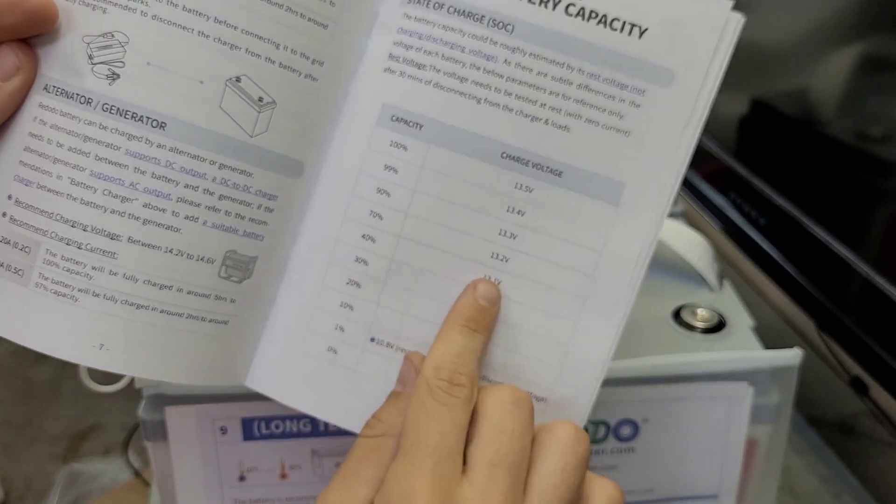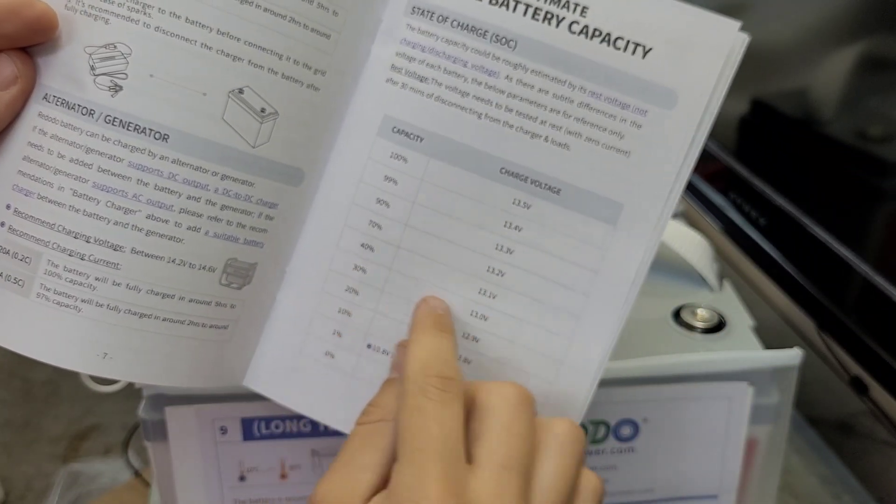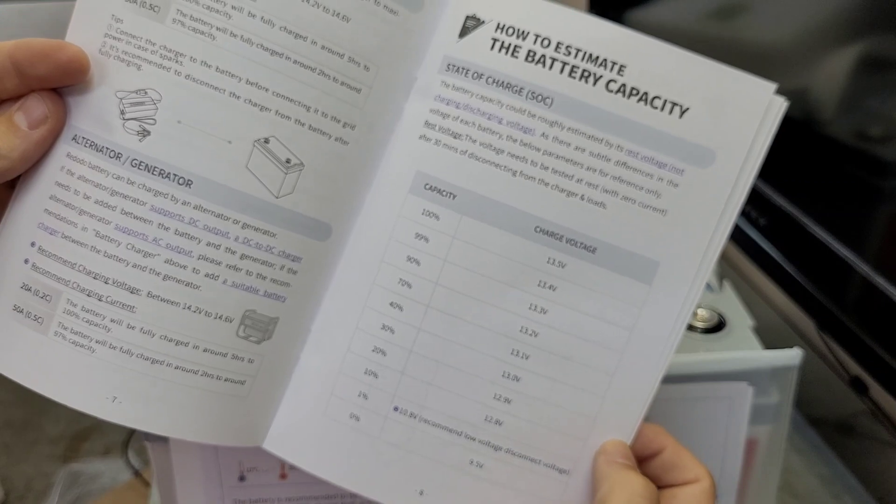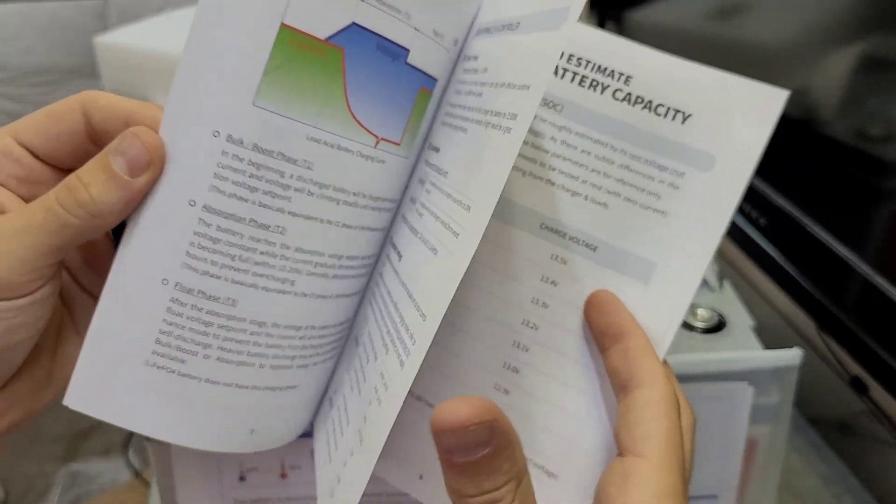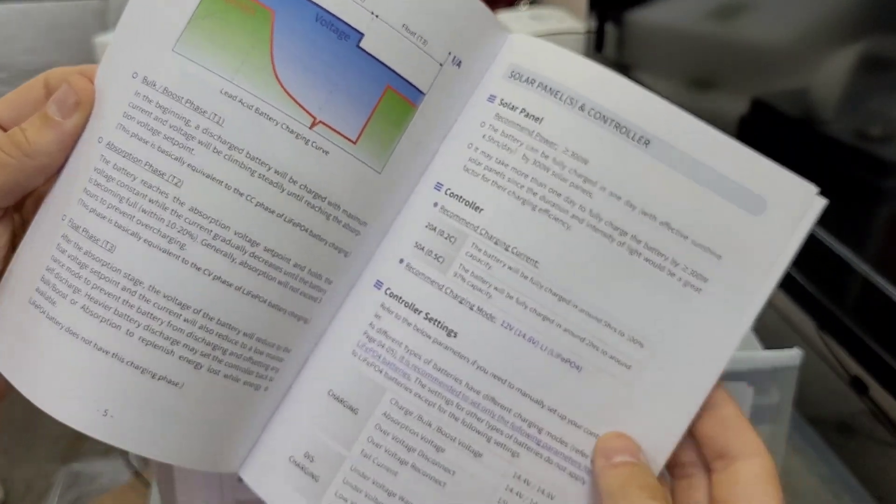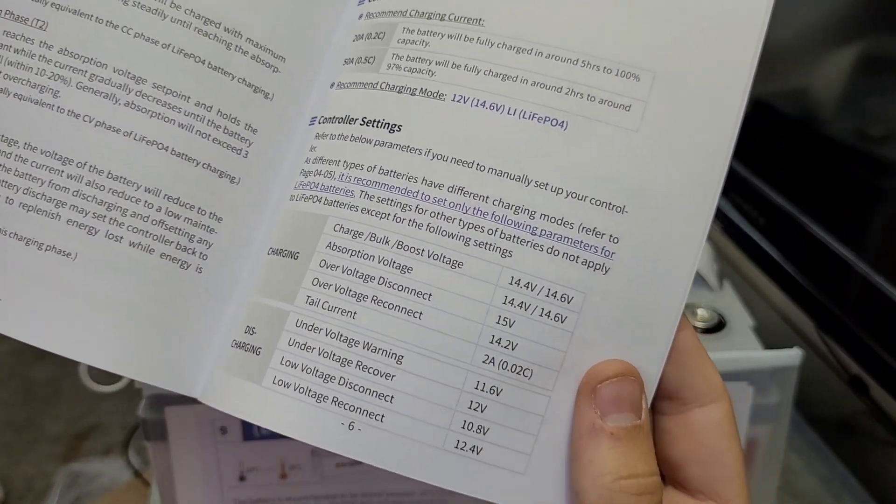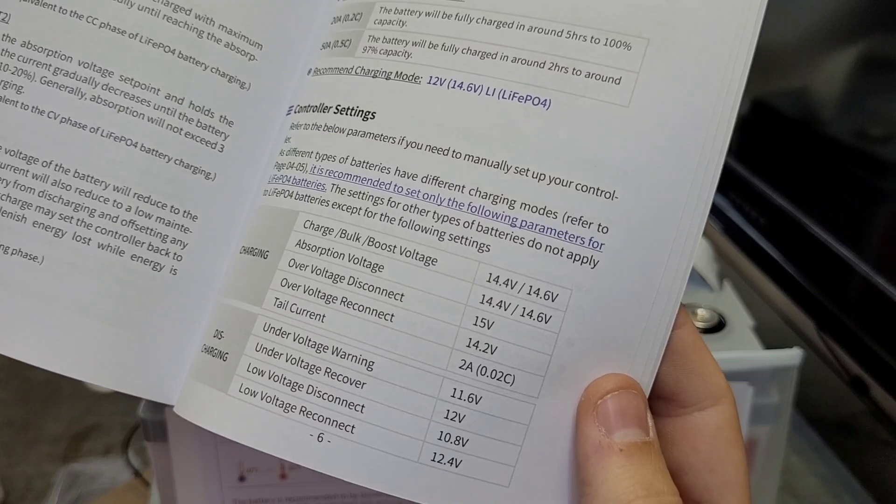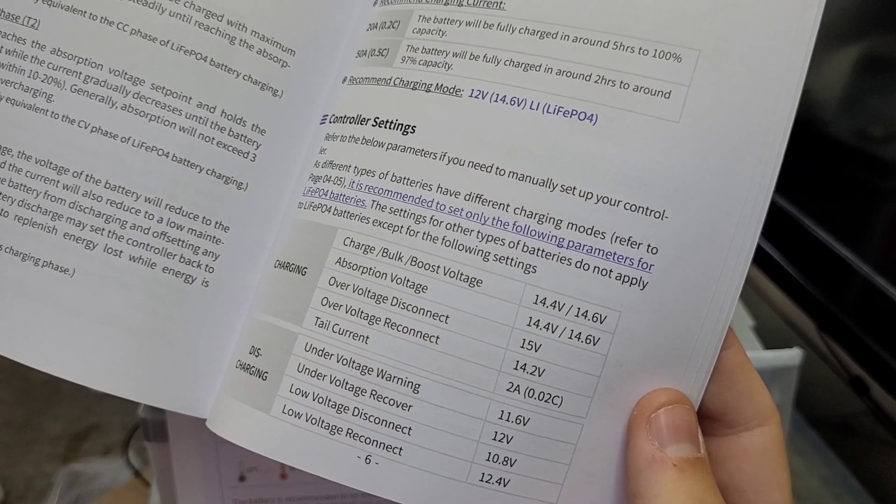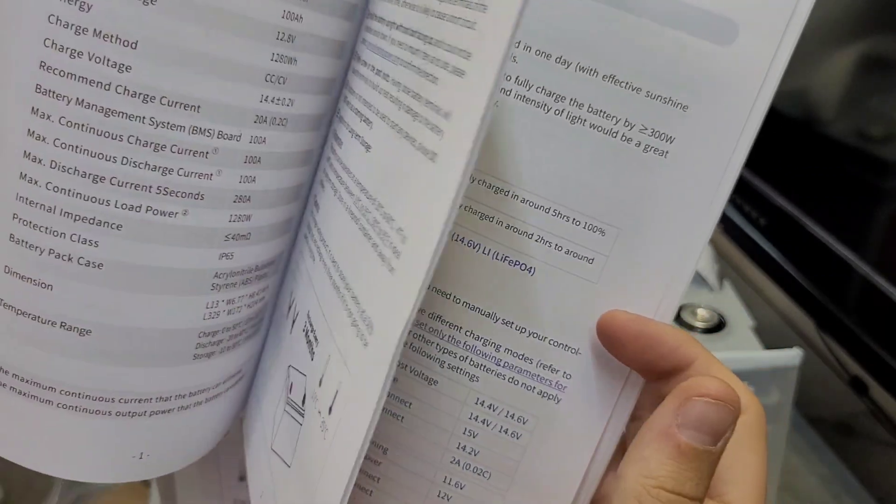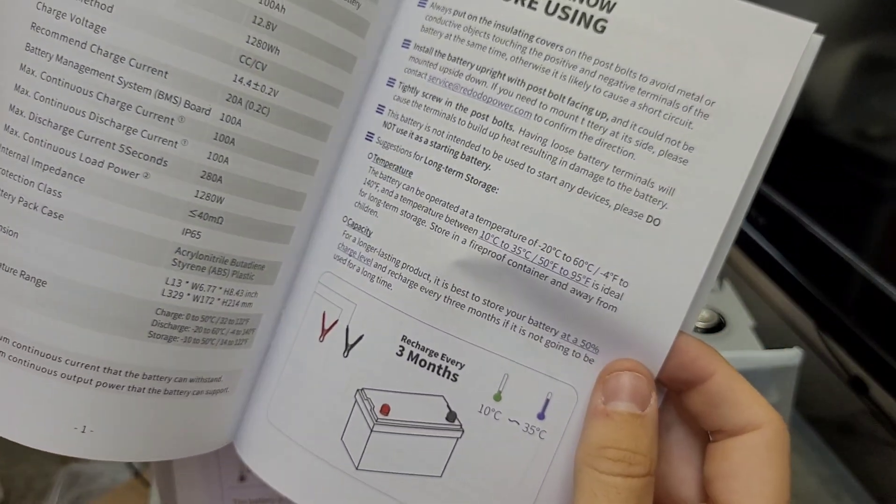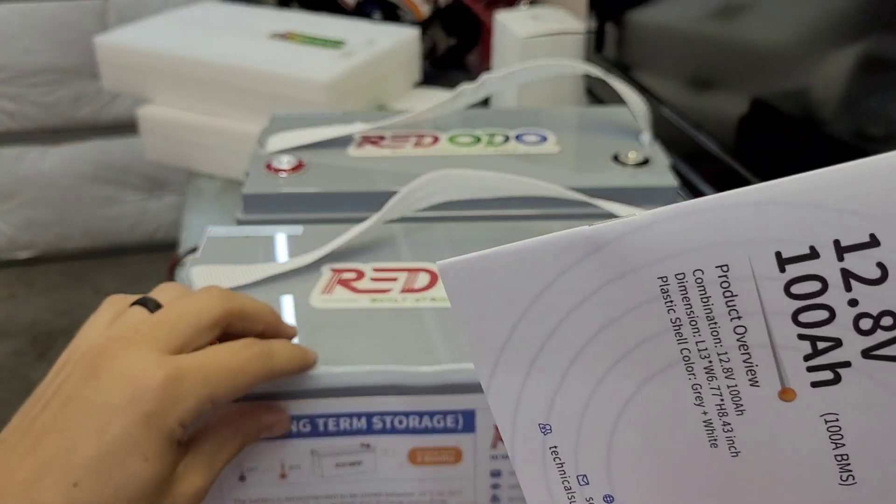There's the state of charge, so yeah, 13.1 - they guess it's around 40 to 50%, but like I said, you need a shunt to really know where these are sitting. There's your charging info. I don't charge mine quite that high - I tend to shoot for around 14.2, sometimes 14 volts, just to not stress them out too much, make them last a little bit longer. I usually just hit the lithium setting on the Victron and let it do its own thing.